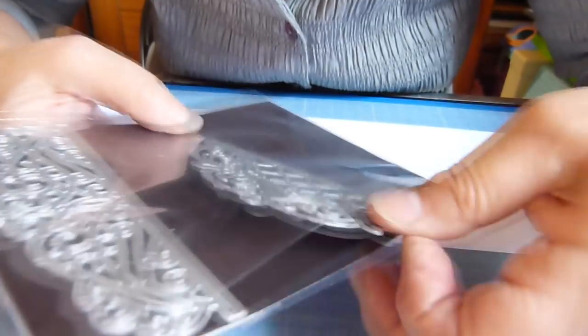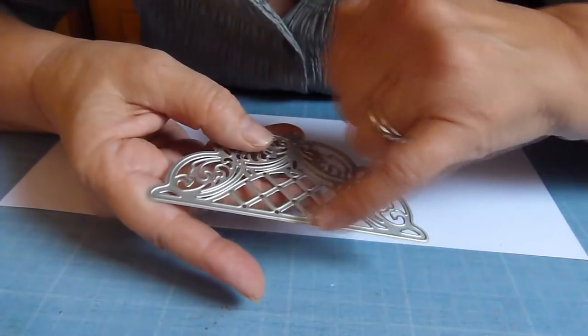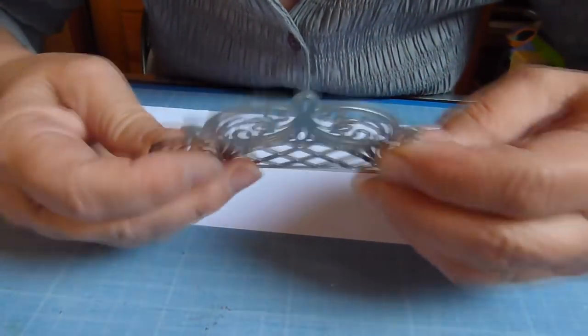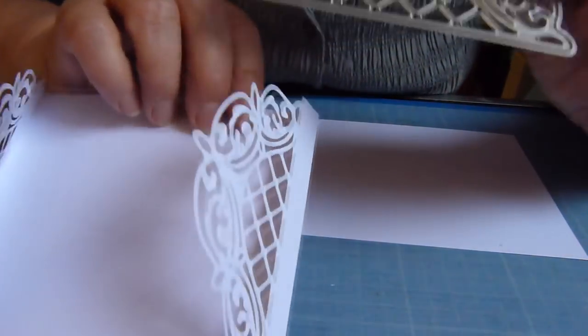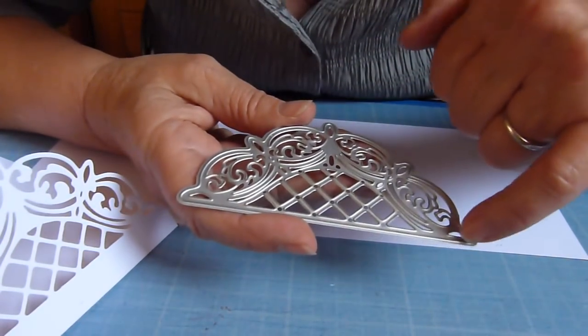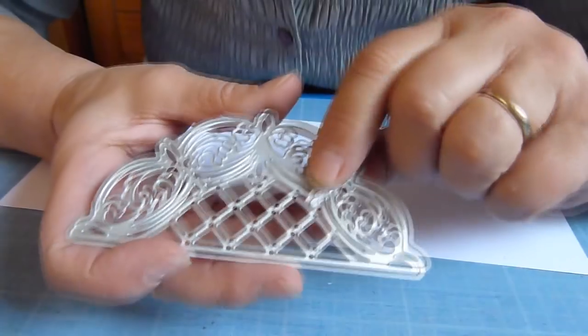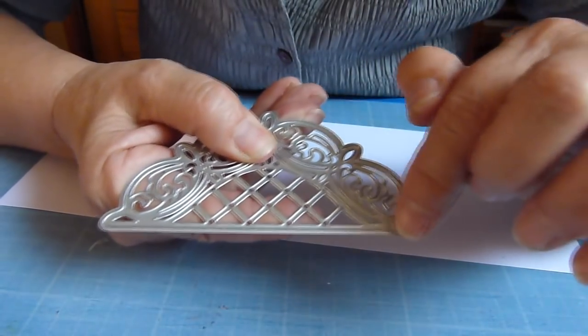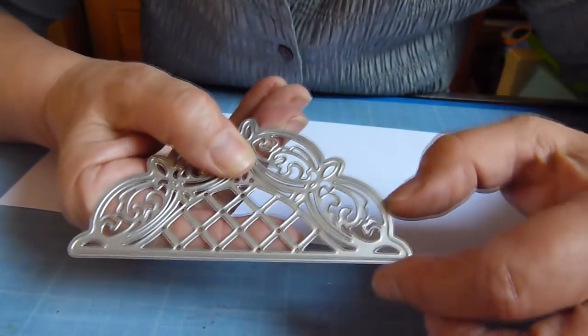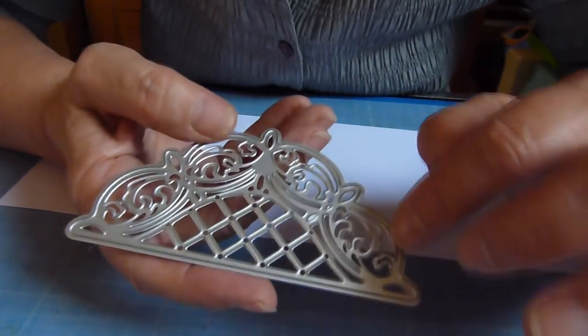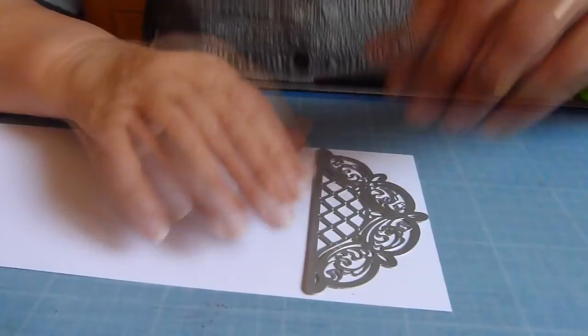Je vais vous montrer la bordure. Normalement la bordure en principe elle se découpe à ce niveau là, mais pour faire cette carte il faut découper partiellement, c'est à dire qu'il faut arrêter la découpe à ce niveau là. Il n'y ait pas de découpe sur ce niveau, il doit juste y avoir la découpe tout autour, mais ici elle doit rester attachée à la carte.